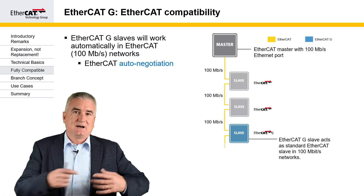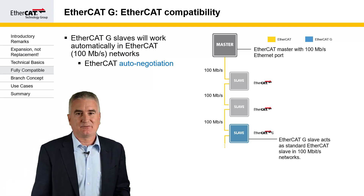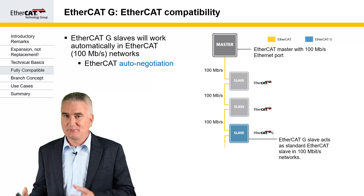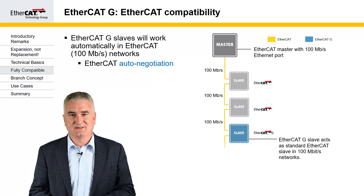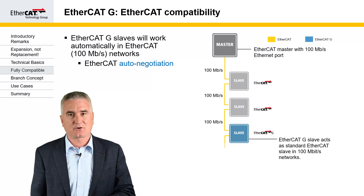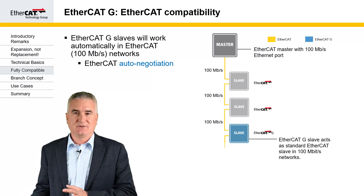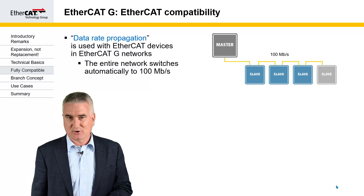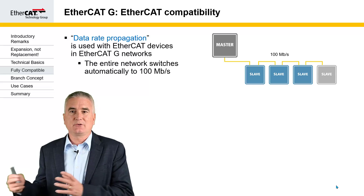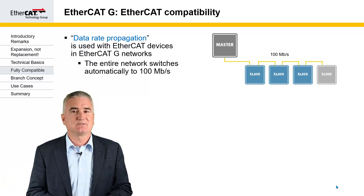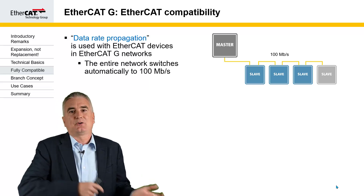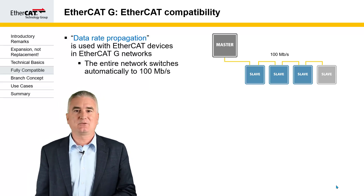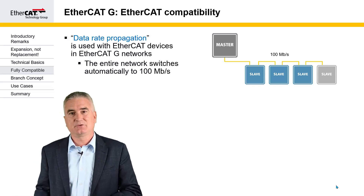It's very important that EtherCAT-G is fully downwards compatible to EtherCAT. Therefore, an EtherCAT-G slave introduced in a 100 megabit EtherCAT environment behaves exactly the same as a 100 megabit device. The auto-negotiation capability of the EtherCAT network ensures that, and the device is switched back to 100 megabit mode. In the other direction, this requires data rate propagation. If you introduce a 100 megabit device into a gigabit environment, the gigabit devices need to learn there is a 100 megabit device in the network. They do this with the data rate propagation functionality and then switch back to 100 megabit, making them fully compatible with the newly introduced device.